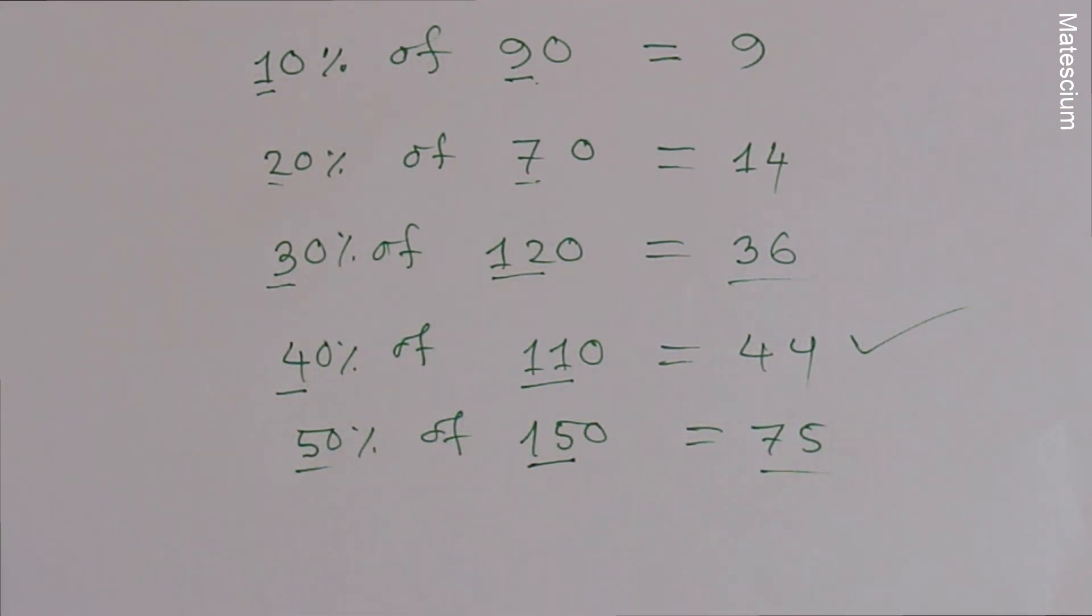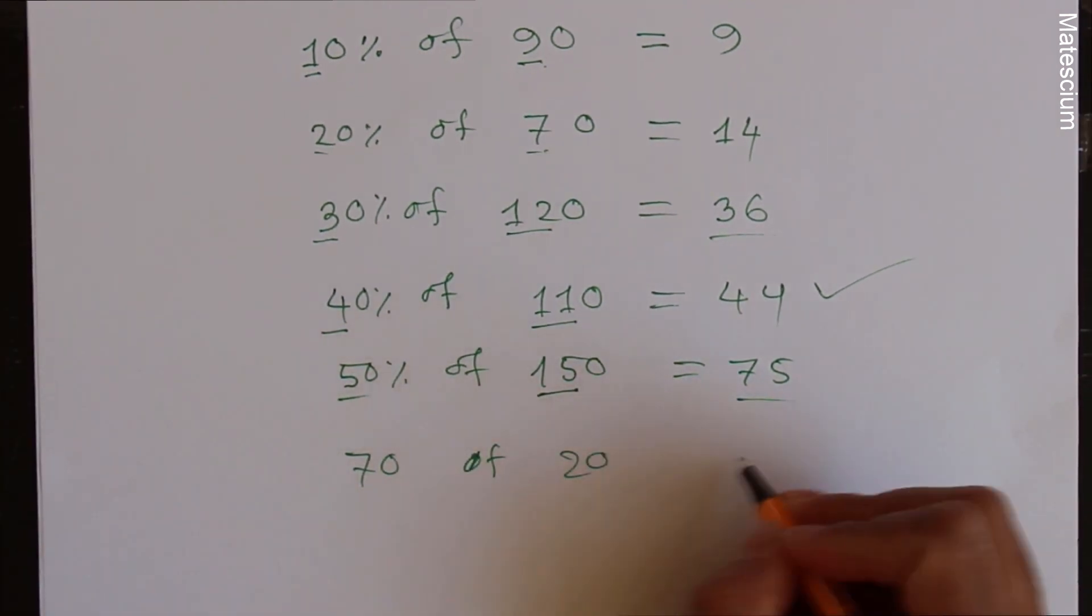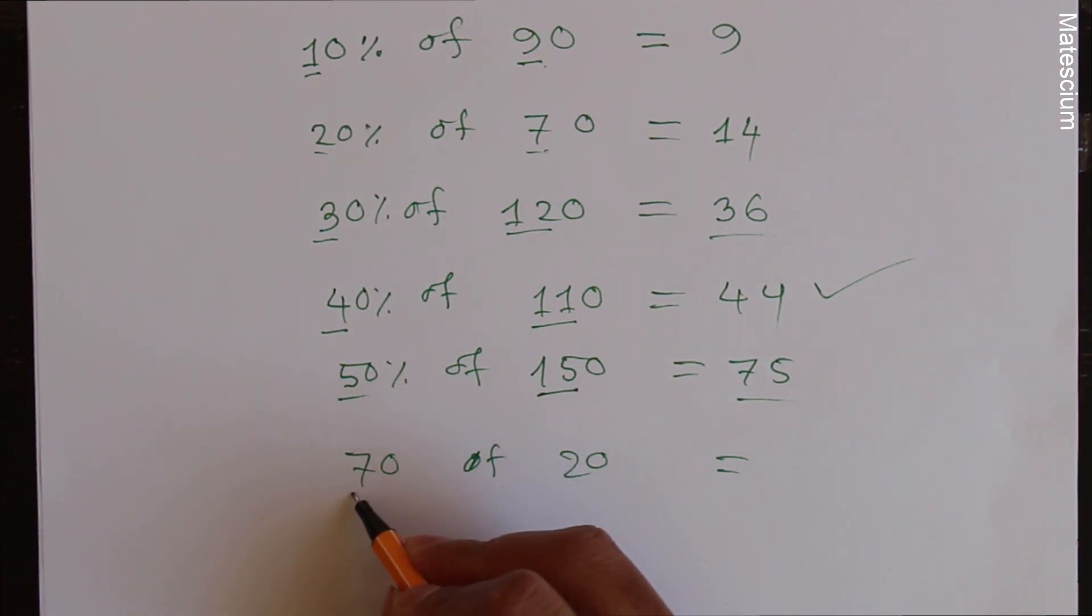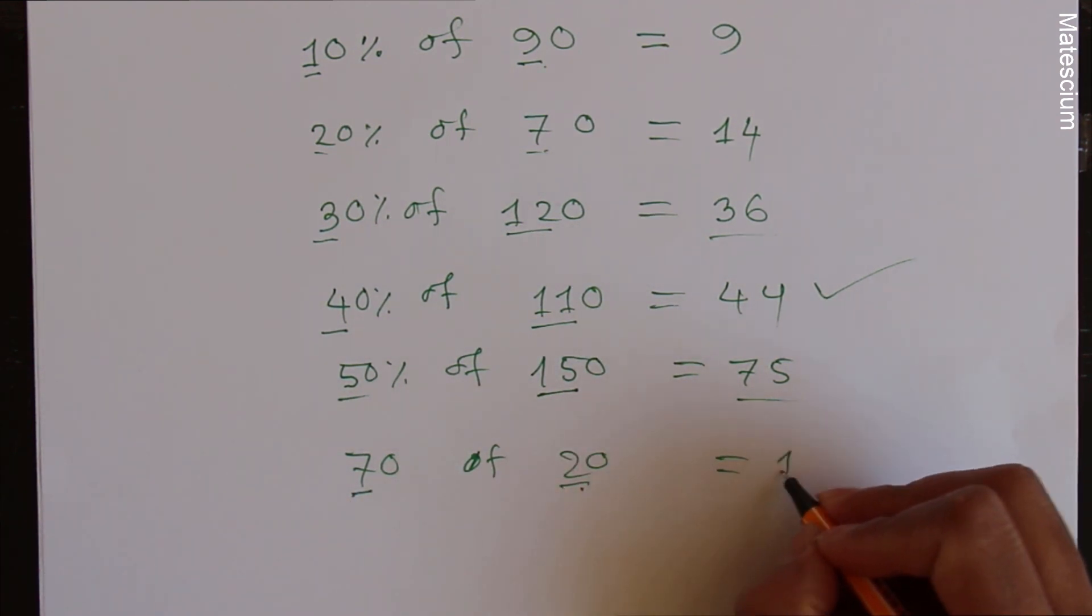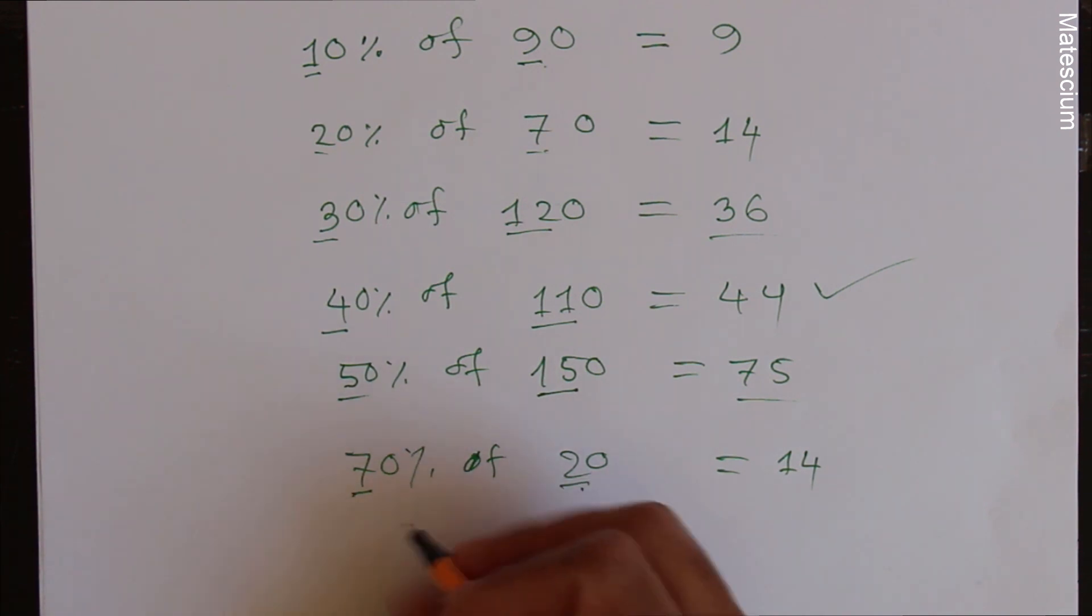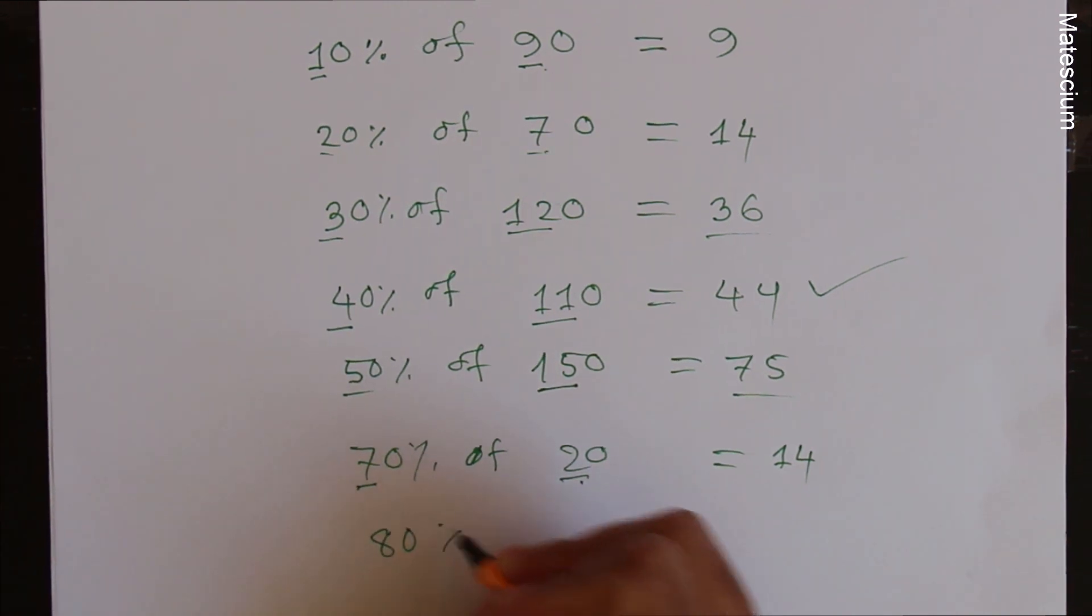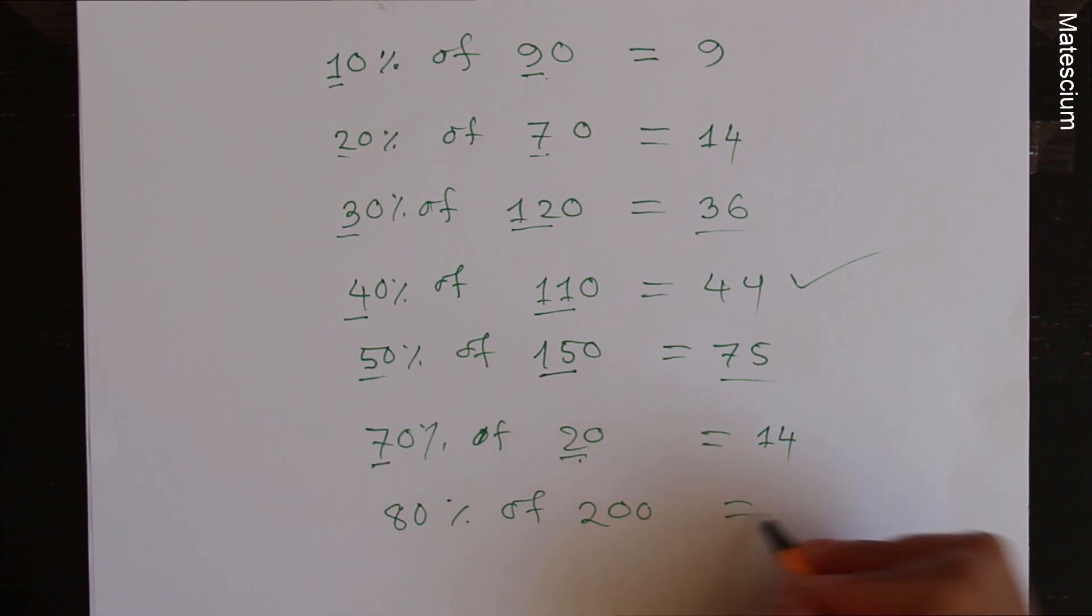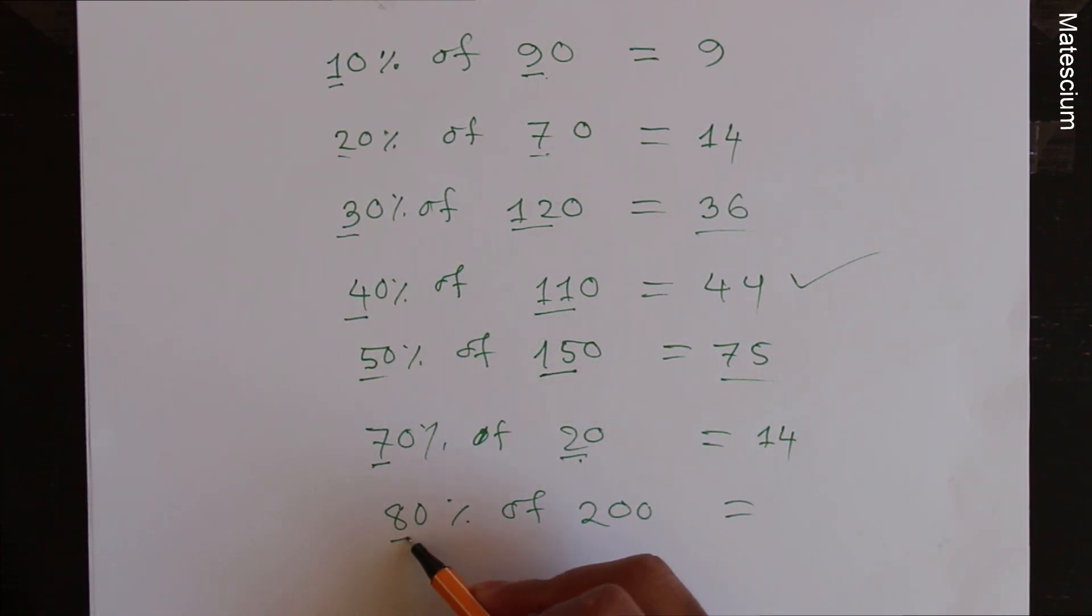That means 75 is the answer of 50% of 150. Let's try again, 70% of 20. Simply multiply 7 by 2, which is 14. Last example, 80% of 200. The answer is simple, multiply 8 with 20.